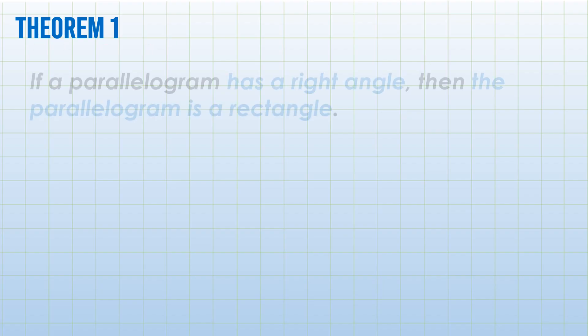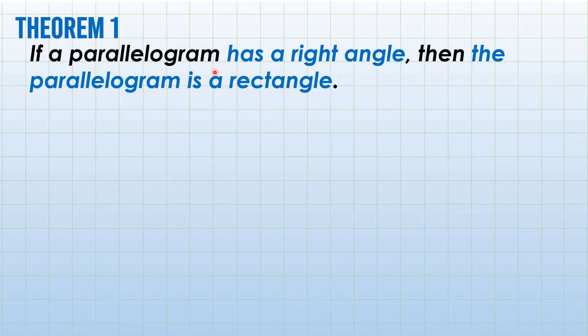Theorem 1: If a parallelogram has a right angle, then the parallelogram is a rectangle. Let's have a parallelogram RECT here, and a 90 degree angle there. This square symbol indicates that it is exactly a 90 degree angle. The theorem says that if you have just one right angle anywhere, the given parallelogram will become a rectangle.